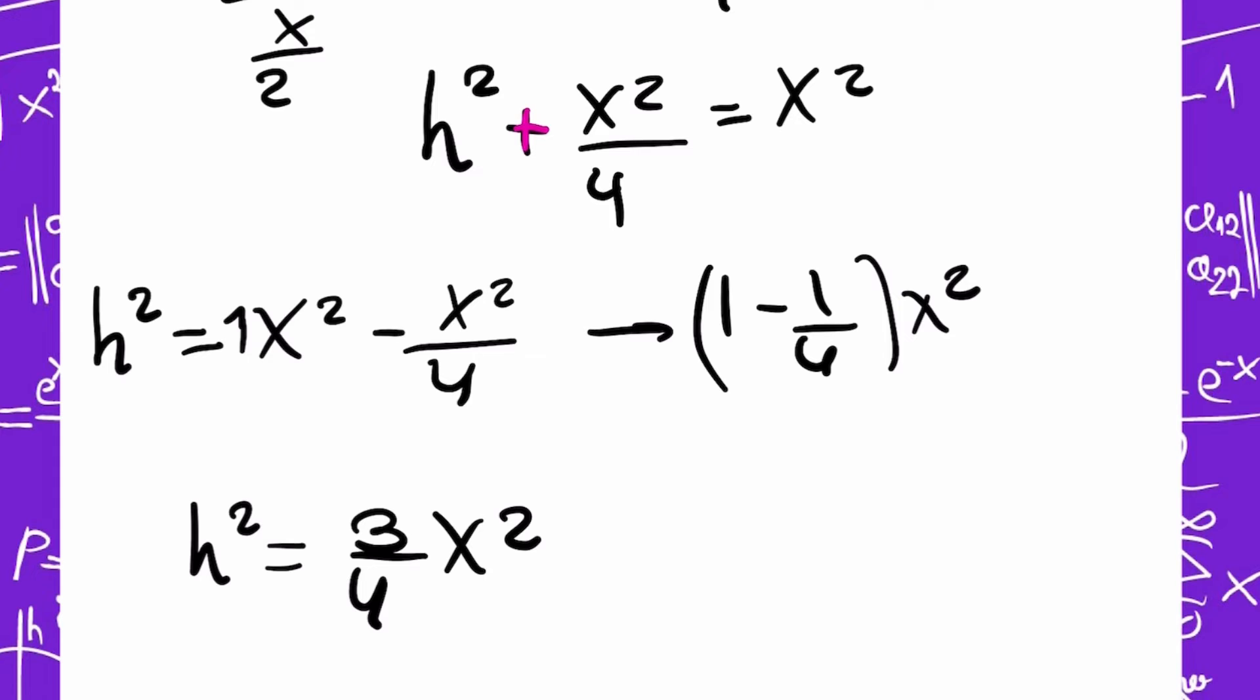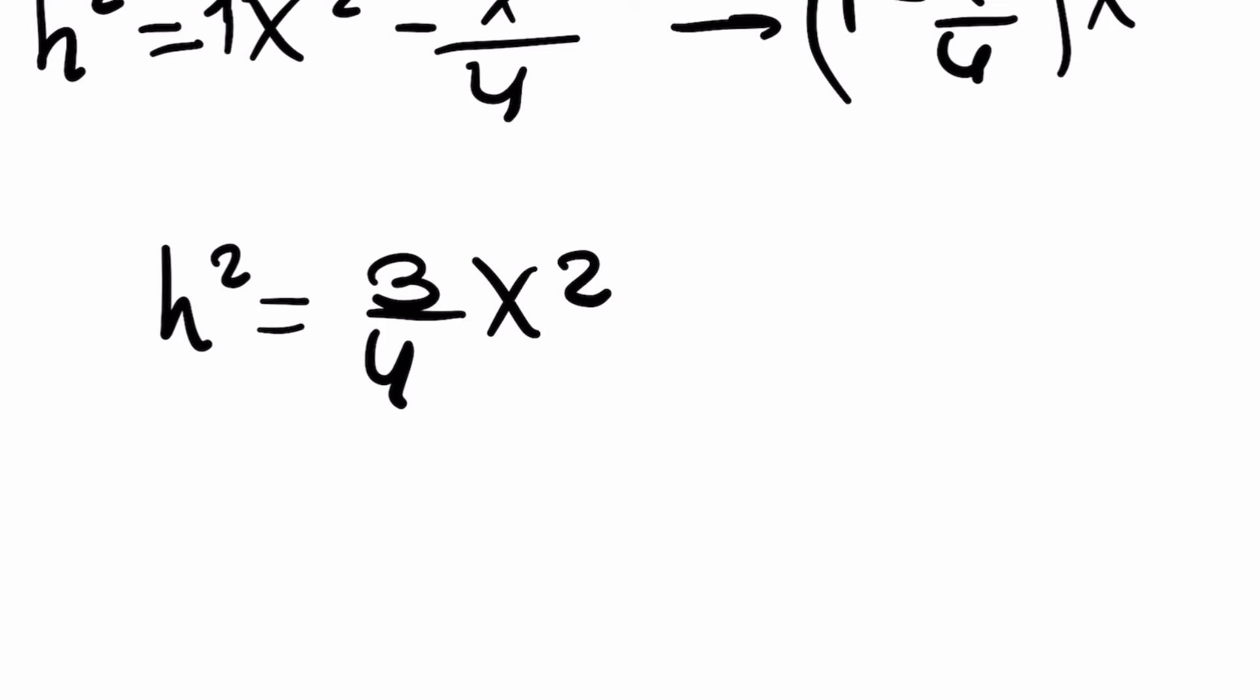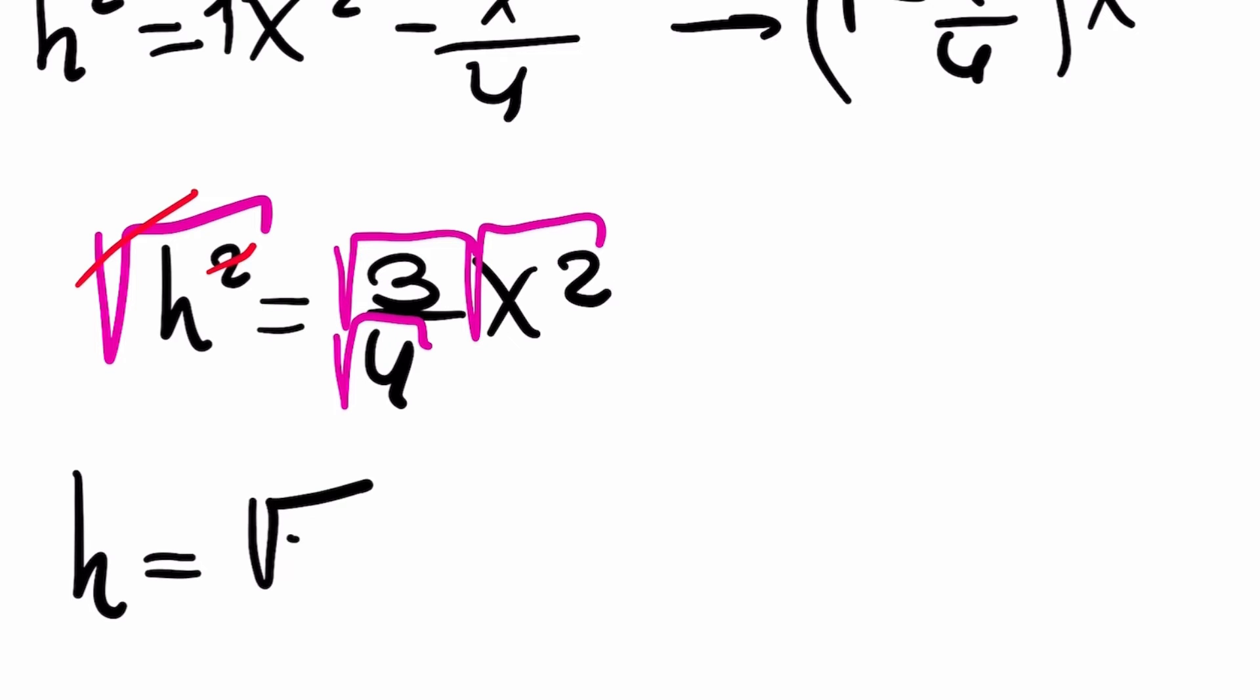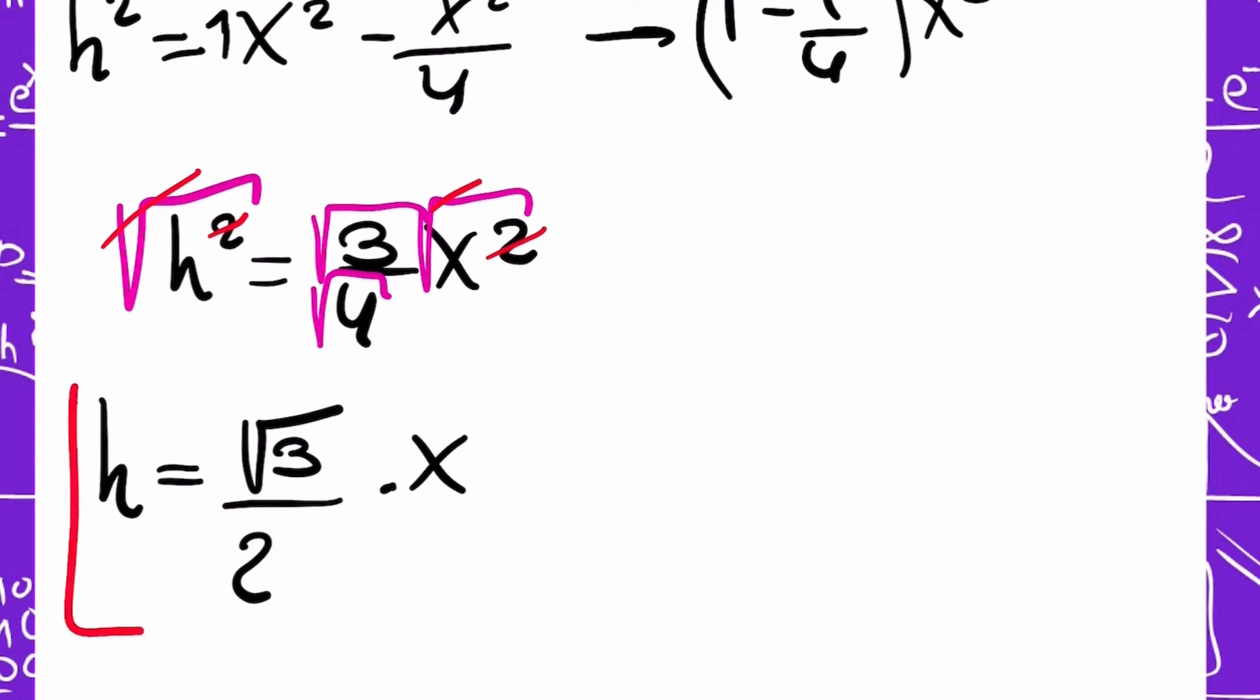But this is not complete, because we need to leave the H alone. I cannot have it if it has a square. So to eliminate the square, I'm going to put a root. But if I put a root in this side of the equation, I also need to put on this side of the equation. But I'm going to do it in separate ways, like this. Root for everyone. So this square eliminates this root. And I have H alone. H equals root 3 divided, the root of 4 is 2. And these two eliminate this root. So I have my X alone. So this is my first result.